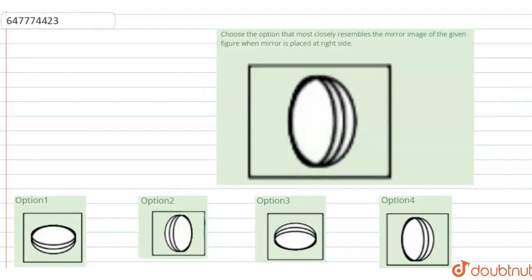Hello, I have a question. Choose the option that most closely resembles the mirror image of the given figure when the mirror is placed at the right side.